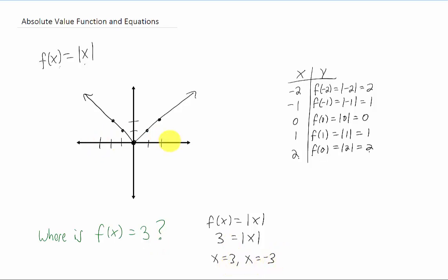We can investigate that further on the graph, because asking where the function value equals three is asking where our graph crosses the line Y equals three. What we found algebraically — and can confirm graphically — is that our function crosses Y equals three at two X values: negative three and positive three.